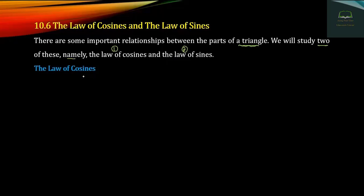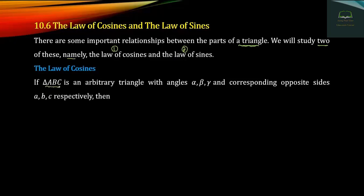Triangle ABC is a triangle. In triangle ABC, the angles A, B, C each have a corresponding opposite side: small a, small b, small c.